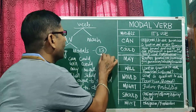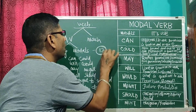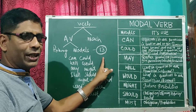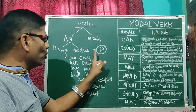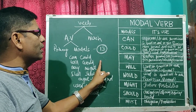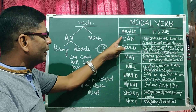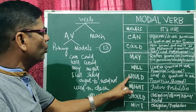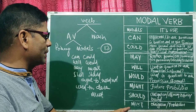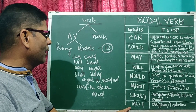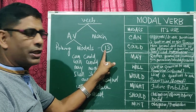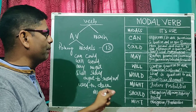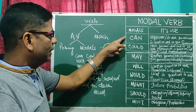In English, there are 13 number of modals. But out of these 13, the most used modals are: can, could, may, will, would, might, should, must. There are 13 modals in English but we are using these modals on a regular basis.